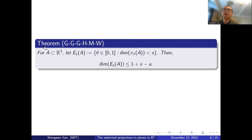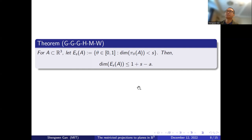Next, let me state our main theorem. Instead of proving the original conjecture, we actually prove the stronger version, which is the Falconer-type exceptional set estimate. We define the exceptional set to be the set of theta such that the Hausdorff dimension of pi_theta of A is less than S, and we prove this Falconer-type bound.